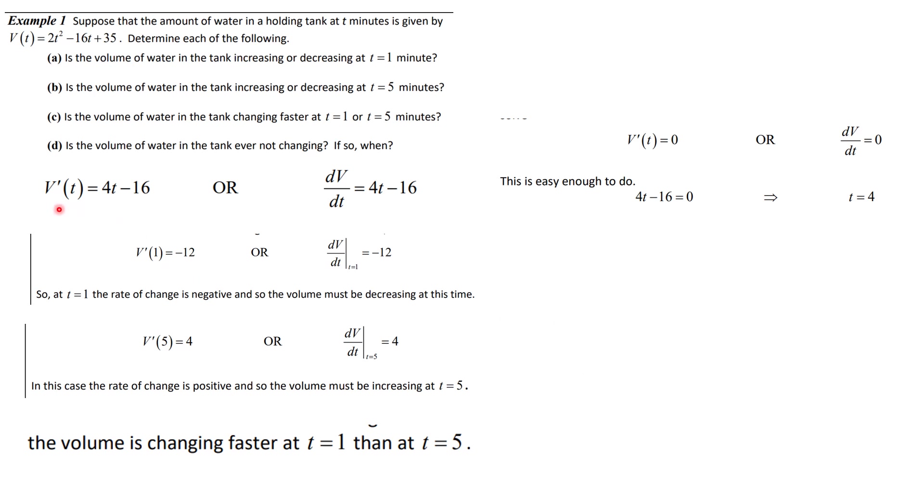Looking back in your notes, you know that v prime of t is 4t minus 16, or dv dt is equal to 4t minus 16, two different notations. So the first question says, what's happening at time t equal 1? We just plug 1 in here. This is the instantaneous rate of change, and so it is going to be minus 12. It is decreasing because the first derivative is negative.